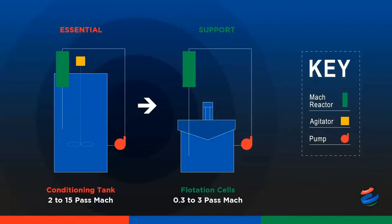How would we install a MACH on an existing float plant? What we at Gold Ore view as essential is a multi-pass system on a conditioning tank ahead of the flotation bank, supported by recirculation directly on flotation cells to maintain the picobubble effect down the float bank. There are existing clients that have also installed the MACH for external aeration on flotation columns to good effect, hence the MACH may be relatively easily retrofitted into existing plants.